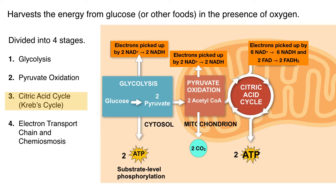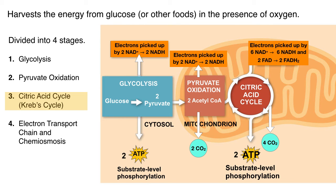Two more ATP are produced by substrate-level phosphorylation during the citric acid cycle, and four more carbon dioxide molecules are released. So let's take stock: we started with a glucose molecule with six carbons. How many carbons are left? None. At this point the sugar molecule is all gone. The carbons and oxygens are gone in the carbon dioxide gas, and the hydrogen is left with the electrons carried by the electron carriers. The sugar is gone and we've only produced four ATP so far — but the process is not done, because the high-energy electrons are still around, being carried by NADH and FADH2 into the next step.